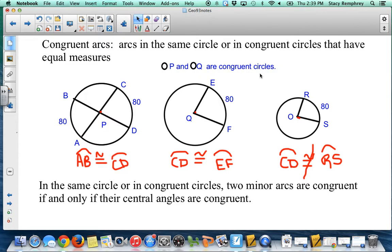Right here, it tells you circle P and circle Q are congruent circles. Because I know these two circles are congruent, and this is 80 degrees, and so is that one, I can say that arc CD is congruent to arc EF. But I needed to know they were congruent circles first.